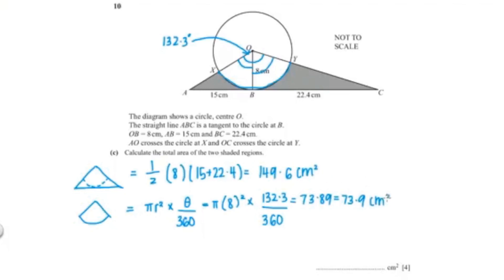And now we're going to subtract 73.9 from 149.6 to find the area of the shaded region. So that would be 75.7 cm square.